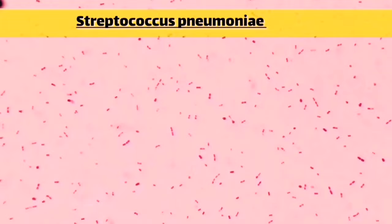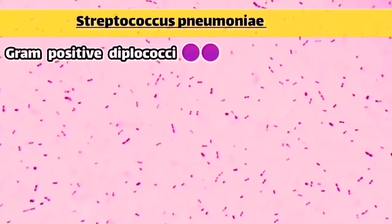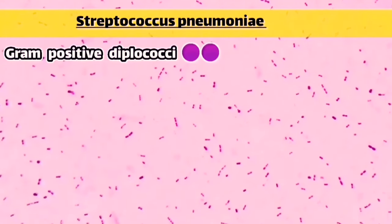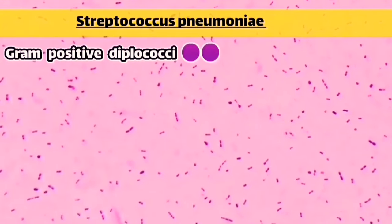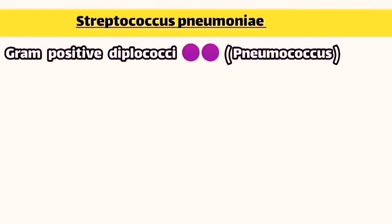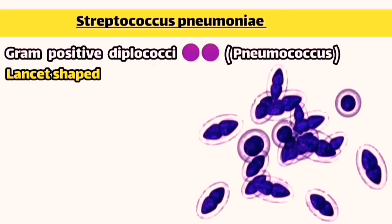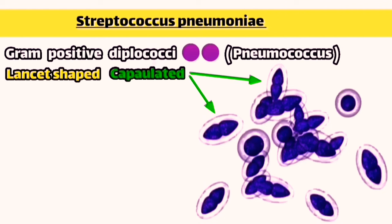It is a gram-positive Streptococci, so it takes a purple color when gram stained and is present in the form of short chains or in pairs. That's why it's called gram-positive diplococci or pneumococcus. The cells of this bacteria are lancet-shaped, so they are not spherical but rather have sharp ends, and they are also characterized by being surrounded by a well-developed capsule.